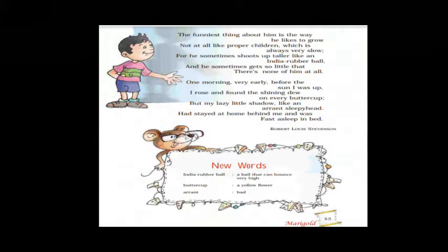Next stanza: 'One morning very early, before the sun was up, I rose and found the shining dew on every buttercup.' Dew means drops of water. Buttercup is a yellow flower. One morning the poet woke up before everyone, even before the sun, and saw drops of water on the yellow flower. Children, you can see drops of water on leaves or flowers early in the morning if you wake up early.